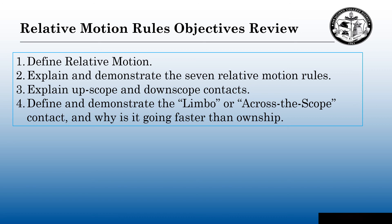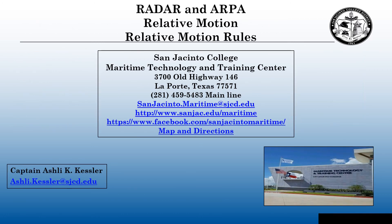Let's review our relative motion rules objectives. In this video, we: 1. Defined relative motion. 2. Explained and demonstrated the 7 relative motion rules. 3. Explained up-scope and down-scope targets. 4. Defined and demonstrated the limbo or across-the-scope contact and why it is going faster than own ship. If you have any questions or comments on this video, you can email me at my campus email at ashley.kessler@sjcd.edu.